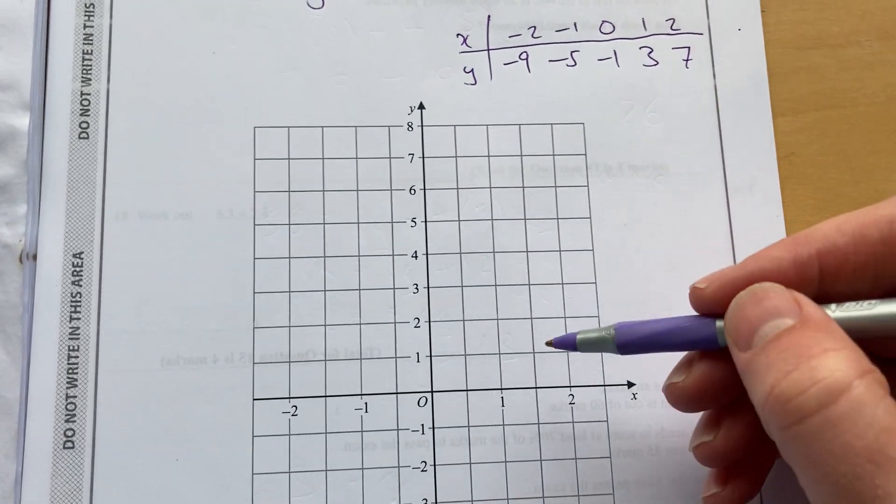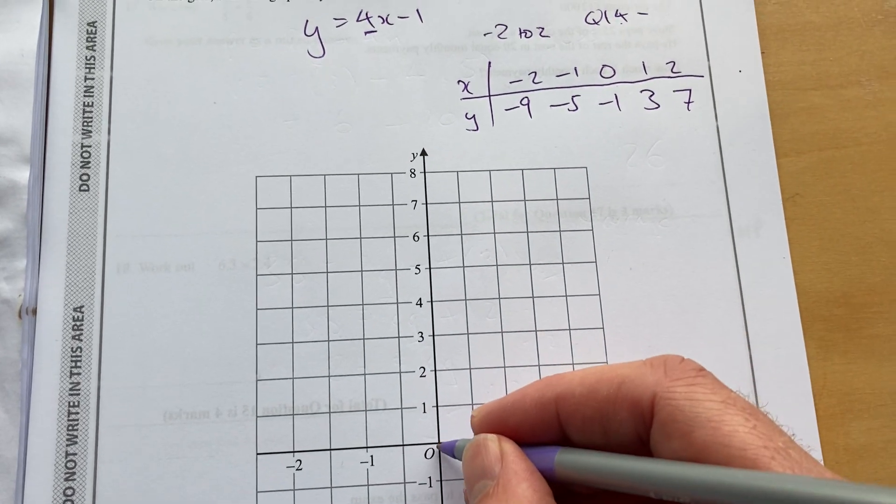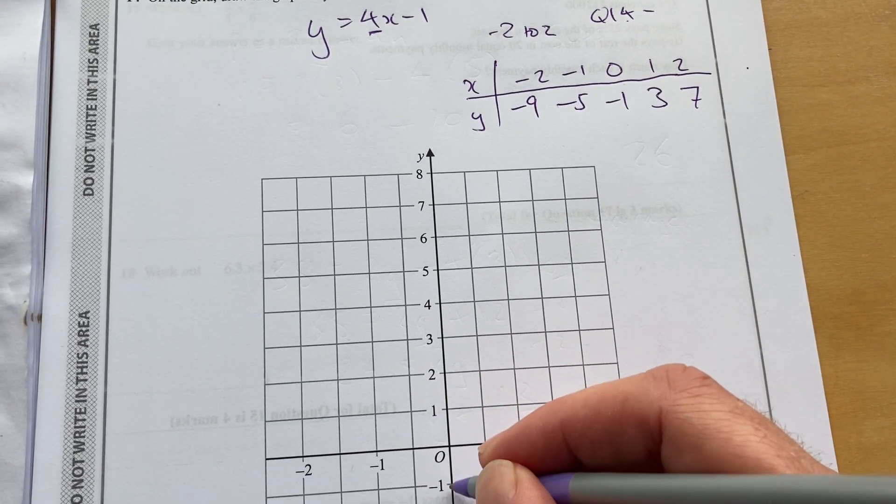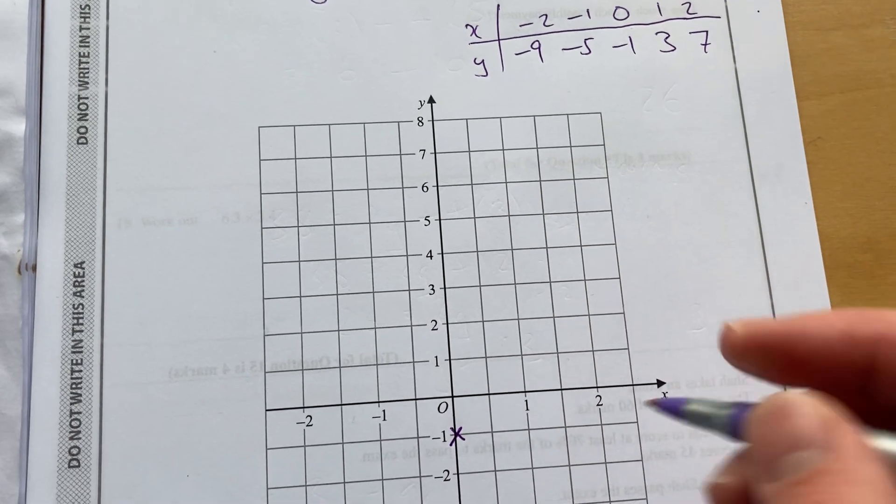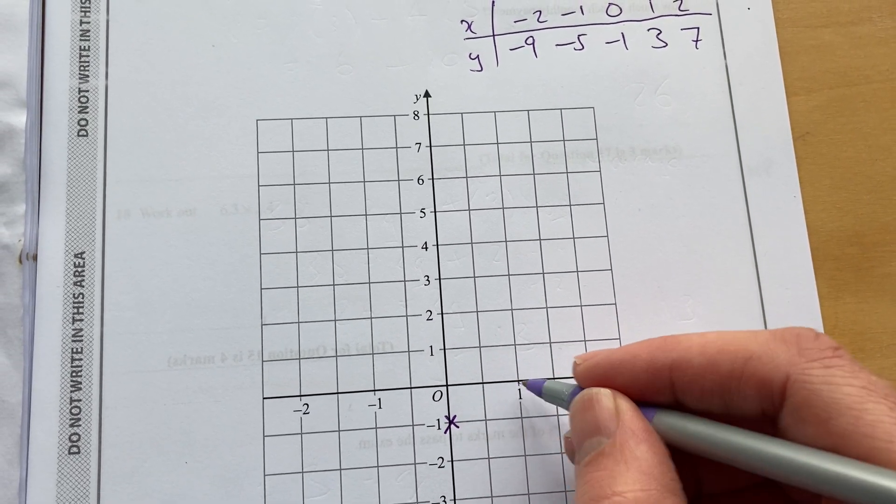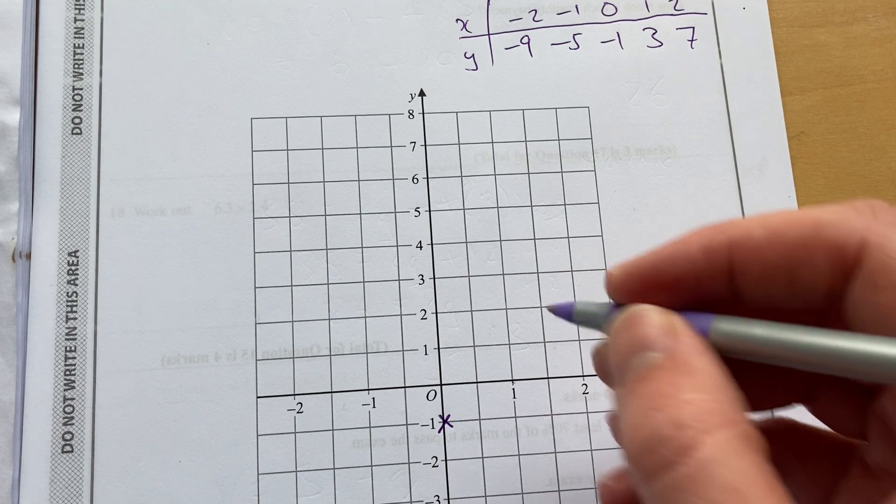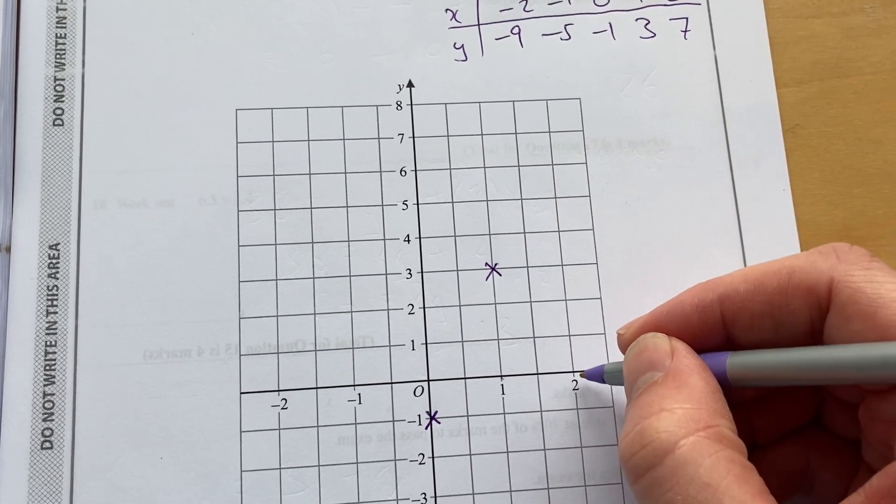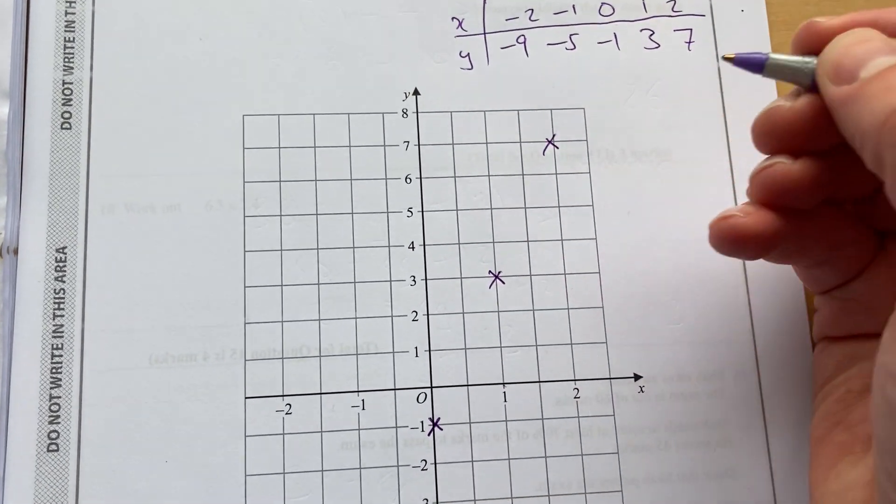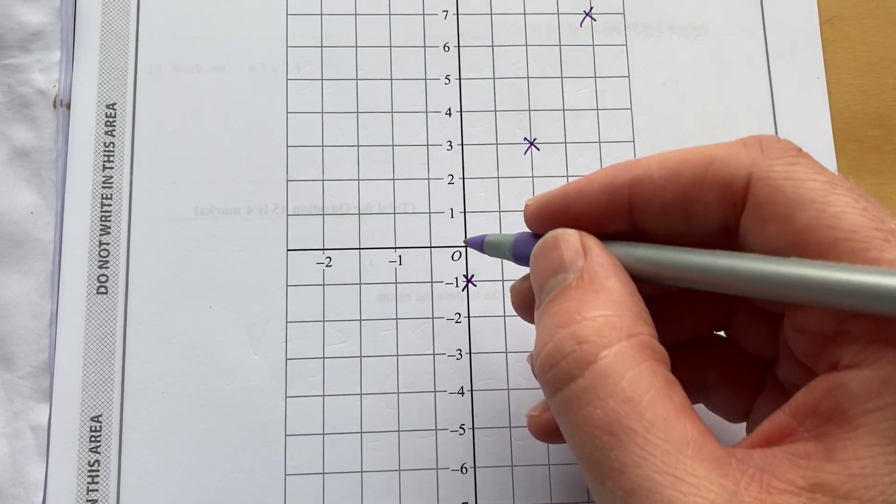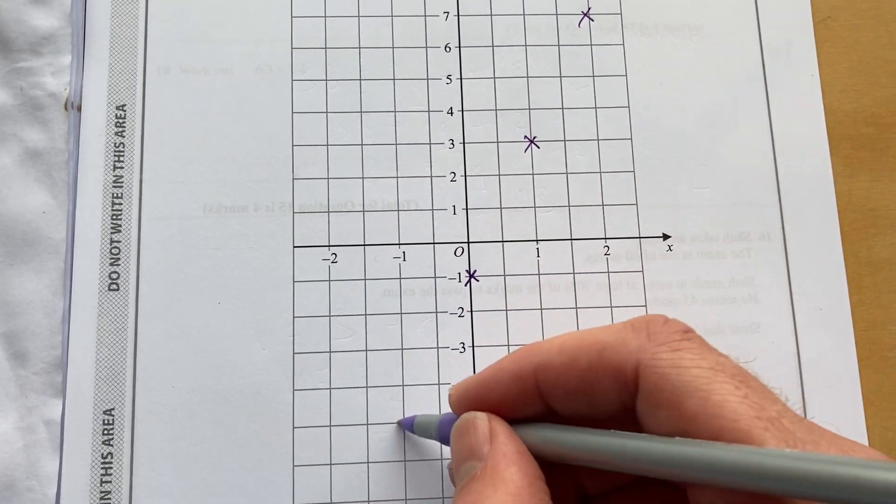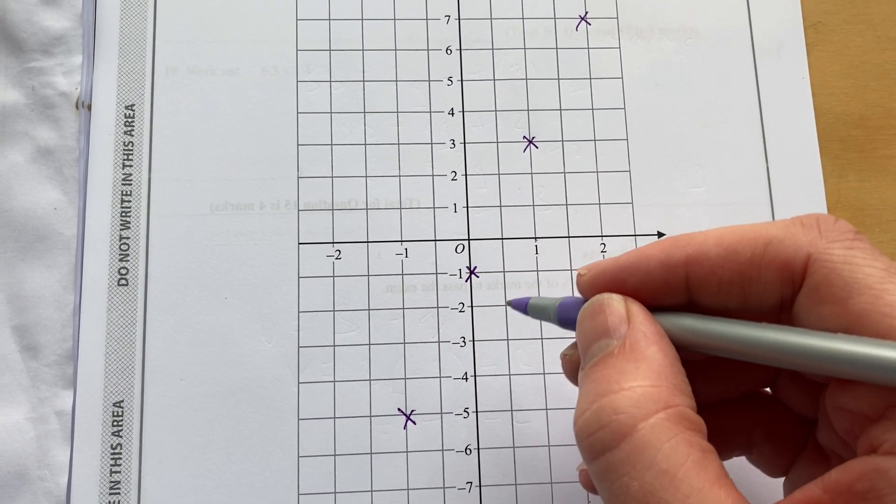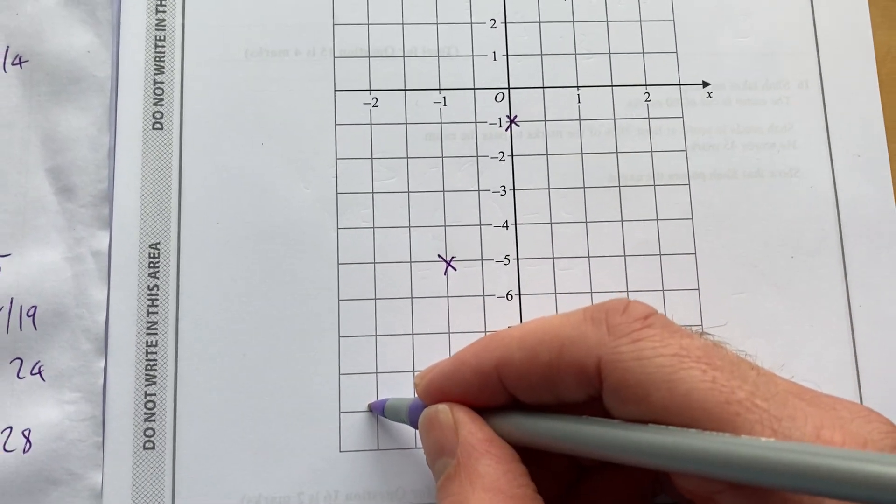And we've got to put those points here. So again, start with the easiest one. Start with 0. When x is 0, y is minus 1. When x is 1, notice the scales are different. When x is 1, y is 3. When x is 2, y is 7. And then going down, when x is minus 1, it'll be minus 5. And minus 2 will be minus 9.